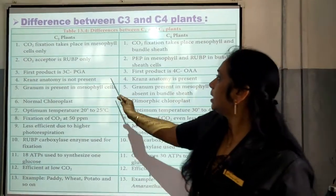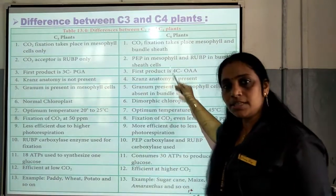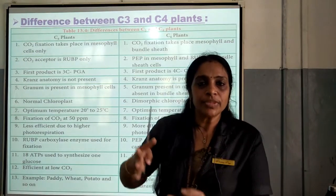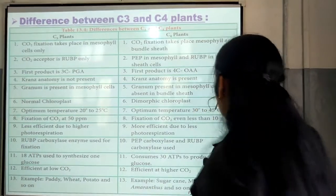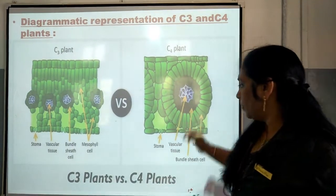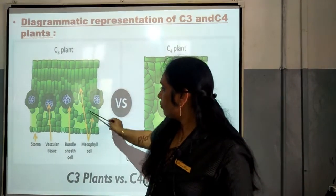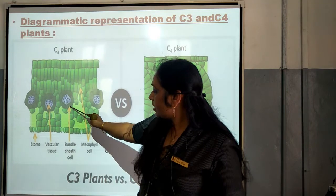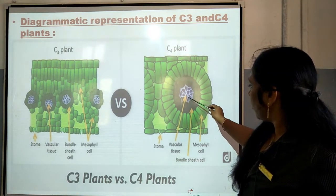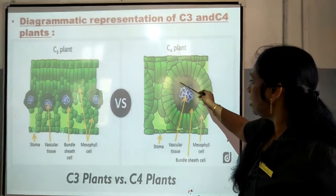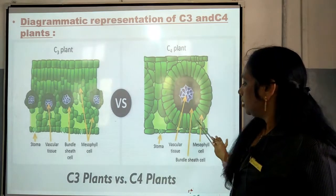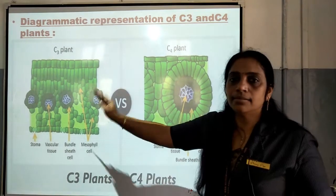This is the difference between C3 and C4. If you go through this part, you will be able to understand about C3 plant as well as C3 cycle, C4 plant as well as C4 cycle. Here you can see the difference between C3 plant and C4 plant. In the case of C3 plant, you can see the mesophyll cells and bundle sheath cells present there. This is the vascular bundle. In the case of C4 plant, the vascular bundle is there, surrounded by the bundle sheath cell, which is surrounded by the mesophyll cell. This is the structure of C4 plant, which is different from C3 plant.